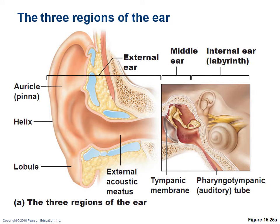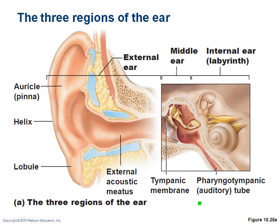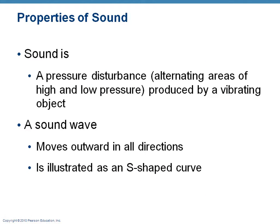Sound enters through the external part of the ear, reaches the middle ear, and vibrates the tympanic membrane, which vibrates the ossicles or bones of the ear, and eventually generates a signal in the cochlea. Sound is a pressure disturbance of alternating high and low frequencies produced by a vibrating object, and a sound wave moves out in all directions.